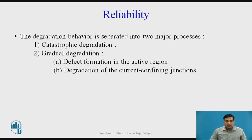Gradual degradation mechanisms can be separated into two categories: defect formation in the active region, and degradation of the current-confining junctions. These degradations are normally characterized by an increase in the threshold current for the laser, which results in a decrease in its external quantum efficiency.